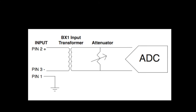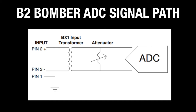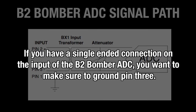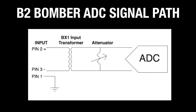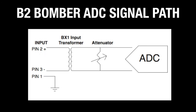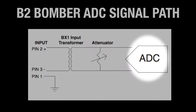Figure 1 on page 6 shows the B-2 Bomber ADC basic signal path. On input, pin 2 is hot, pin 3 is cold, and pin 1 is ground. If you have a single-ended connection on the input, make sure to ground pin 3. After input, the first thing we see is the BX1 input transformer, followed by the input level attenuator. This is crucial to understanding how to use the B-2 Bomber ADC. Following the input level attenuator, you have the ADC chip.